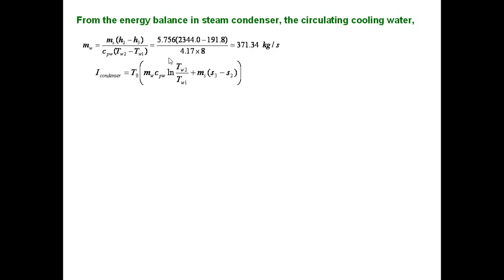Therefore, irreversibility in the condenser is T0 into entropy rise in the hot water and entropy drop in the steam. That is delta S for the hot water and delta S for the steam. After simplification, this is 645.76 kilowatts of loss is observed in the condenser, that is irreversibility loss.